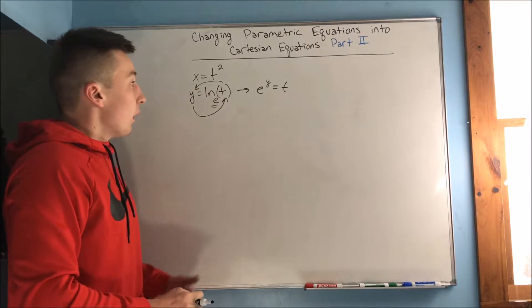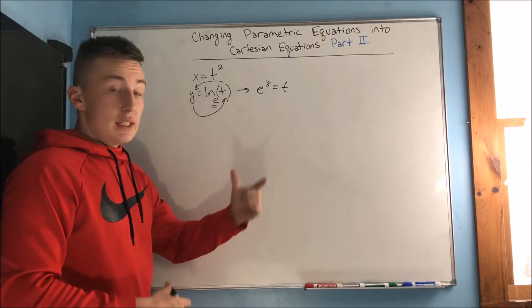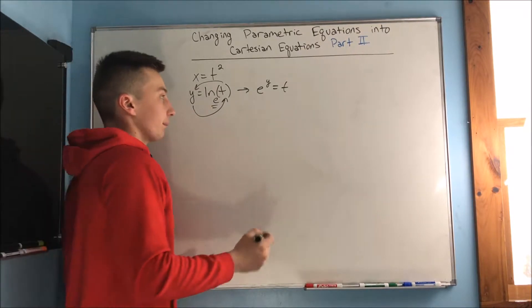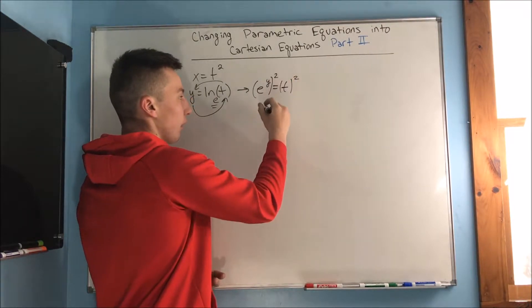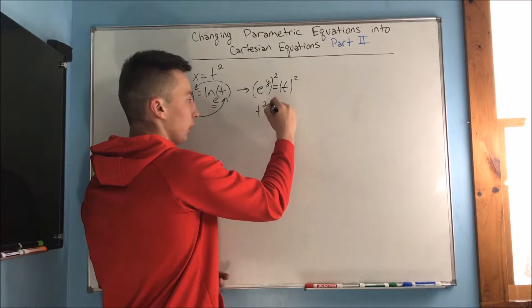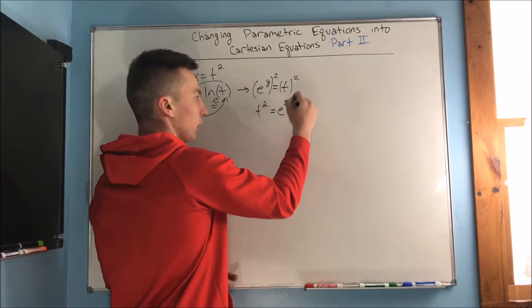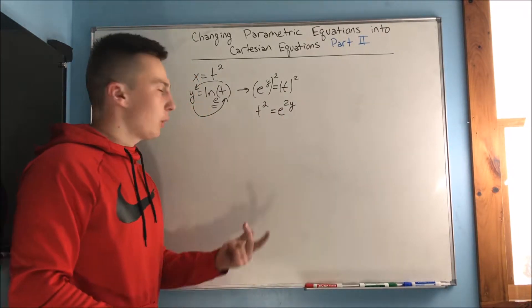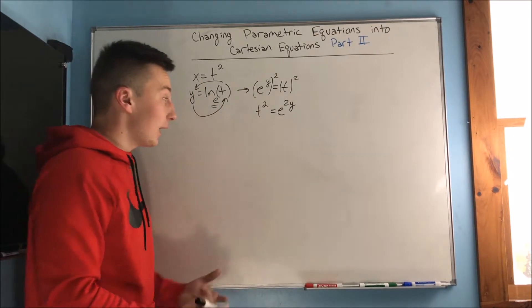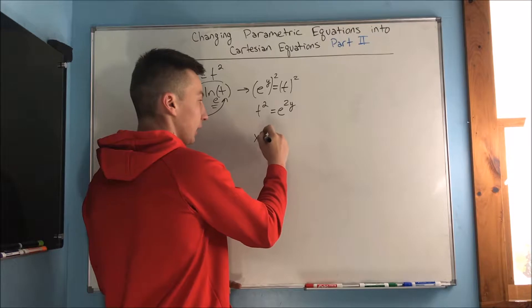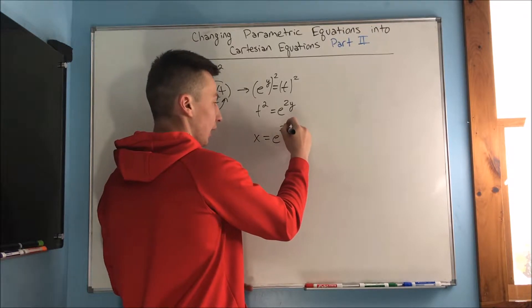That's how I remember how to rewrite a natural log. e to the y equals t. Well, if we square both sides, then we get that t squared equals e to the 2y. Why did I go and square that? Notice up here x equals t squared, so that means we now have our equation x equals e to the 2y.